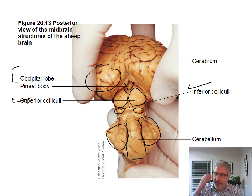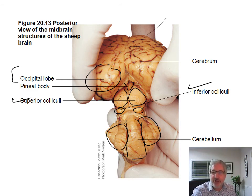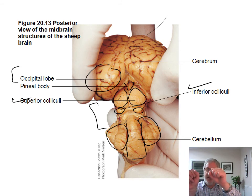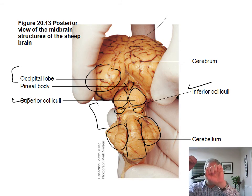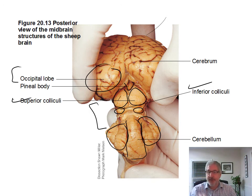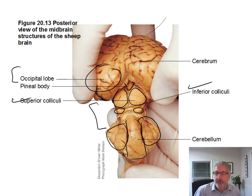This is a good view — you can pull the cerebellum down so you can see the superior and inferior colliculi in that gap. But that whole gap there is the transverse fissure — transverse going across — so that's the transverse fissure between the cerebellum and the cerebrum.